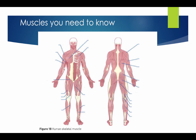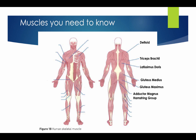Muscles you'll need to know for your exam. The deltoid, the tricep brachii, the latissimus dorsi, the gluteus medius, the gluteus maximus, and the adductor magnus. The hamstring group is split up into three muscles: the bicep femoris, the semitendinosus, and the semimembranosus. The gastrocnemius, and the soleus can be seen on both sides — here on the left and on the right.